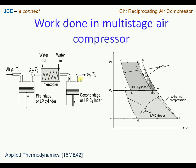Now let us consider the PV diagram. We see a PV diagram here with two cylinders. One enclosed area corresponds to the low pressure cylinder and the other corresponds to the high pressure cylinder. The processes from 1 to 2, 2 to 3, 3 to 4, and 4 to 1 signify the cycle for the low pressure cylinder.